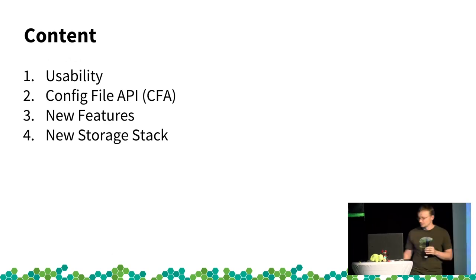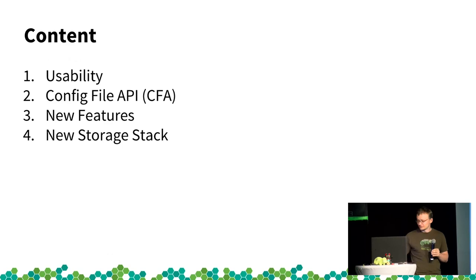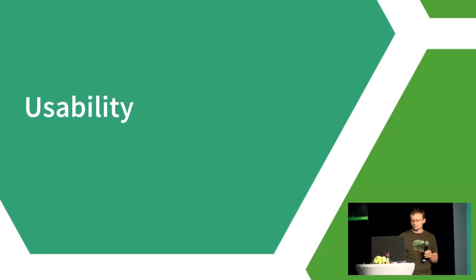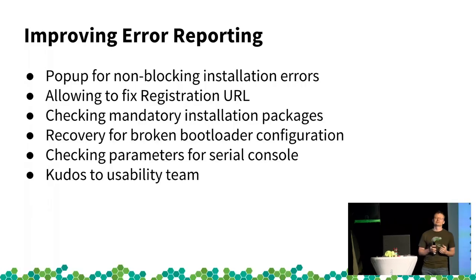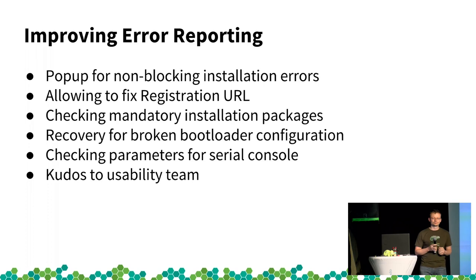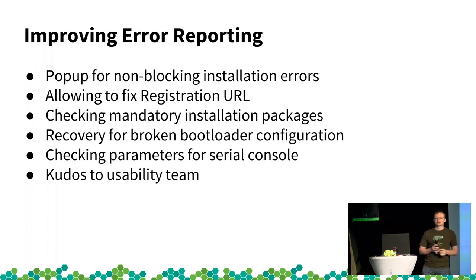Regarding usability, we tried quite a lot to improve error reporting — basically when something goes wrong. If users get a useless error that says nothing, they aren't happy because they'd like to know details about what's going wrong and how they can fix it. One improvement: when there is a non-blocking installation error, which currently is just shown as a red line in the installation summary, we now also raise a pop-up.